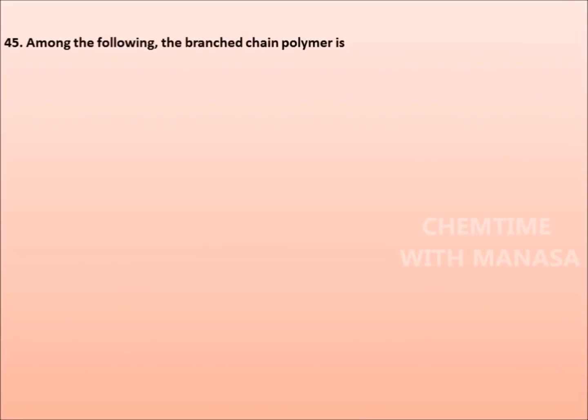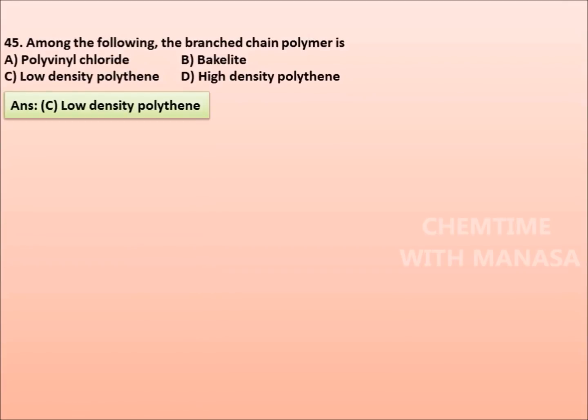Question number 45: Among the following, the branched chain polymer is polyvinyl chloride, bakelite, low density polythene, or high density polythene. And the answer is low density polythene.